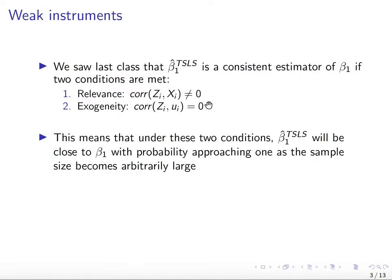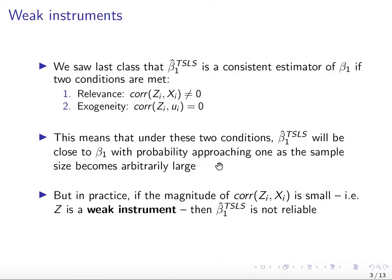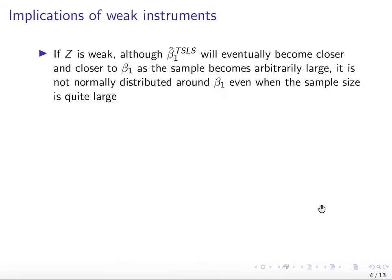If these two conditions are met, then beta-hat two-stage least squares will be close to the true beta 1 with probability approaching 1 as the sample size becomes arbitrarily large — which is the definition of a consistent estimator. Note, though, that if the relevance condition — the correlation between z and x — is quite small, then we're going to talk about a weak instrument, and then beta two-stage least squares is not going to be reliable.